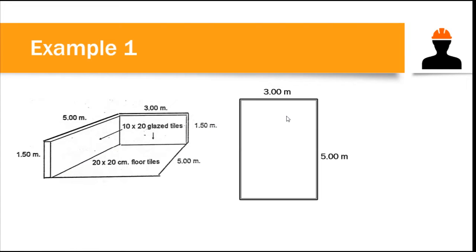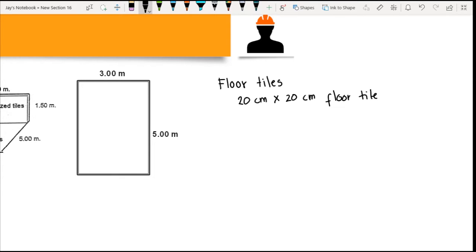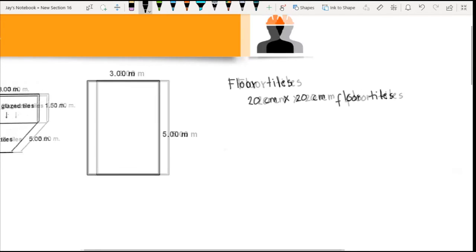The first thing, as I mentioned, is to compute the area where your tiles will be placed. Since we have two different types of tiles — a 10 by 20 and a 20 by 20 centimeter tile — we have different tile types available in the market such as 60 by 60 and 50 by 50 centimeter tiles. It depends on your preference. The first thing is to compute the floor area. We have a 20 by 20 centimeter floor tile, and we will compute how many we need for our floor.